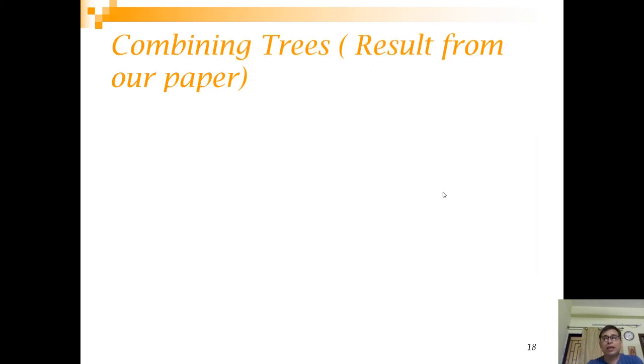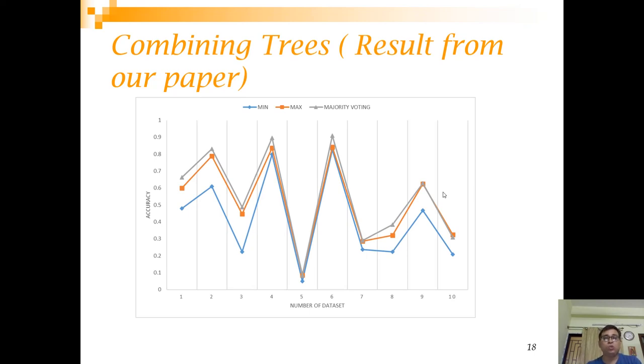Now that gives us a motivation that if it is non-robust, it only draws straight line boundaries. Can we combine trees? This is a small result from one of our conference papers. We ran decision tree on multiple datasets. We have used in this particular graph nine decision trees. This blue line is where we have got minimum accuracy, and this red or amber line is where we have got maximum accuracy among those nine decision trees. This gray line is what we have got using a majority voting of the nine decision trees. You can see that it has improved the mean a lot, and many cases it has also performed better than the maximum decision tree.